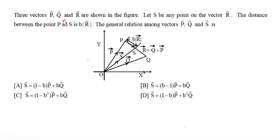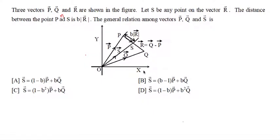Three vectors P, Q, and R are shown in the figure. Let S be any point on the vector R. The distance between point P and S is b times mod of vector R. The general relation among vectors P, Q, and S is... so here we have to find the general relation between P, Q, and S.